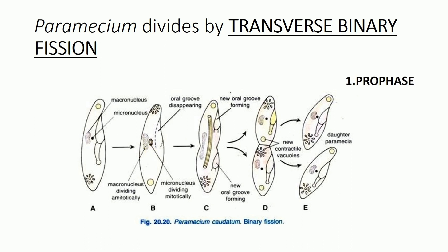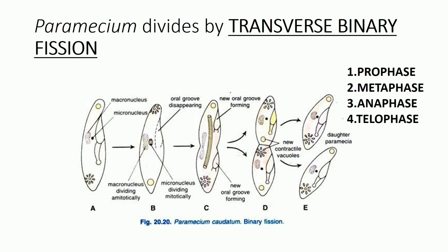The micronucleus, which is dividing mitotically, goes through the full set of mitotic stages: prophase, in which chromosomes arrange themselves into chromatids; metaphase, in which chromosomes arrange themselves at the equatorial plate; anaphase, when they start moving towards opposite poles; and finally telophase, in which the chromatids have reached the opposite poles, leading to an elongated formation of the micronucleus. While this is happening, two new oral grooves also form — one in the anterior portion of the body and one in the posterior portion.